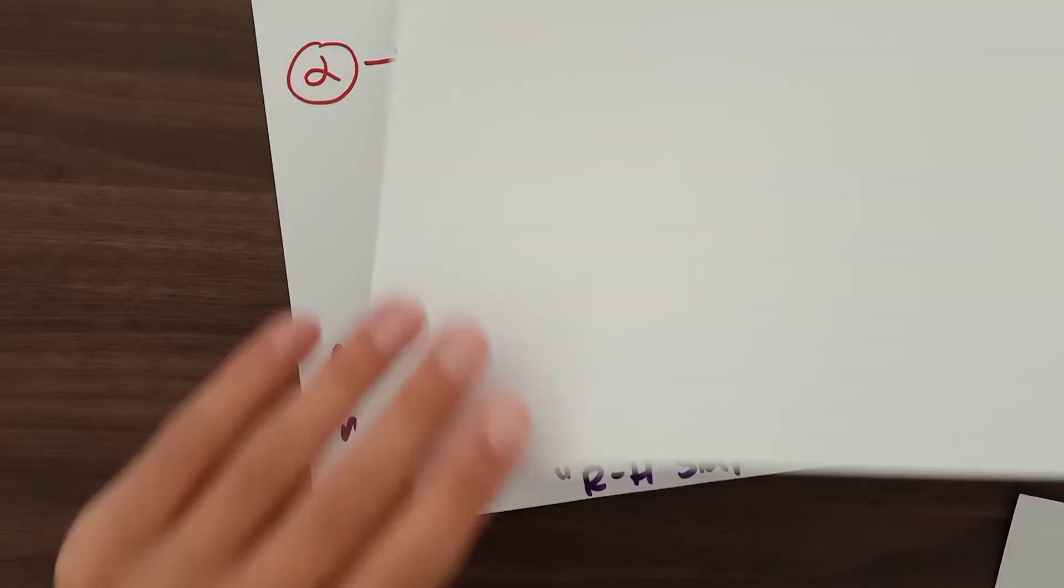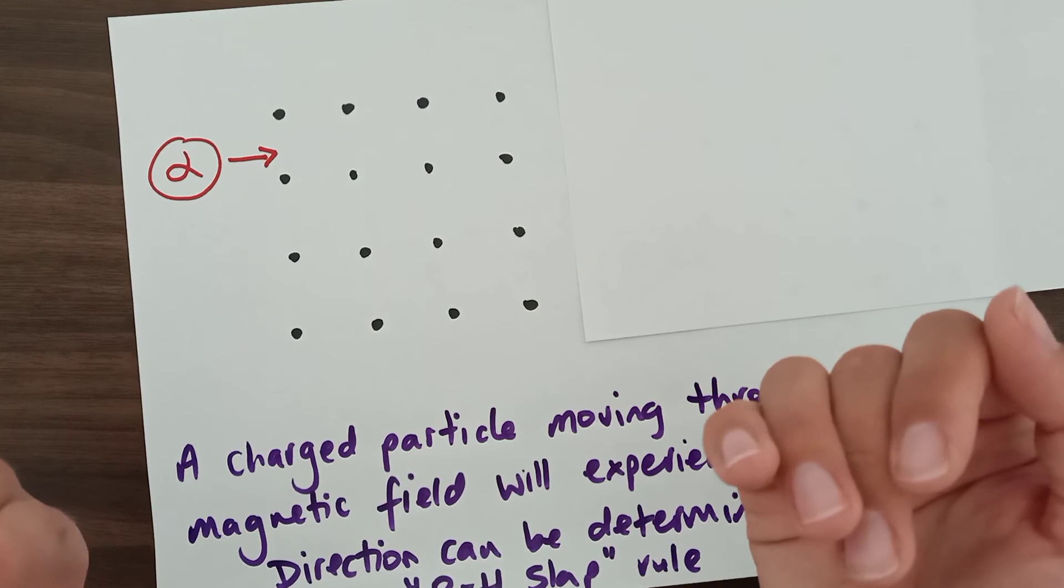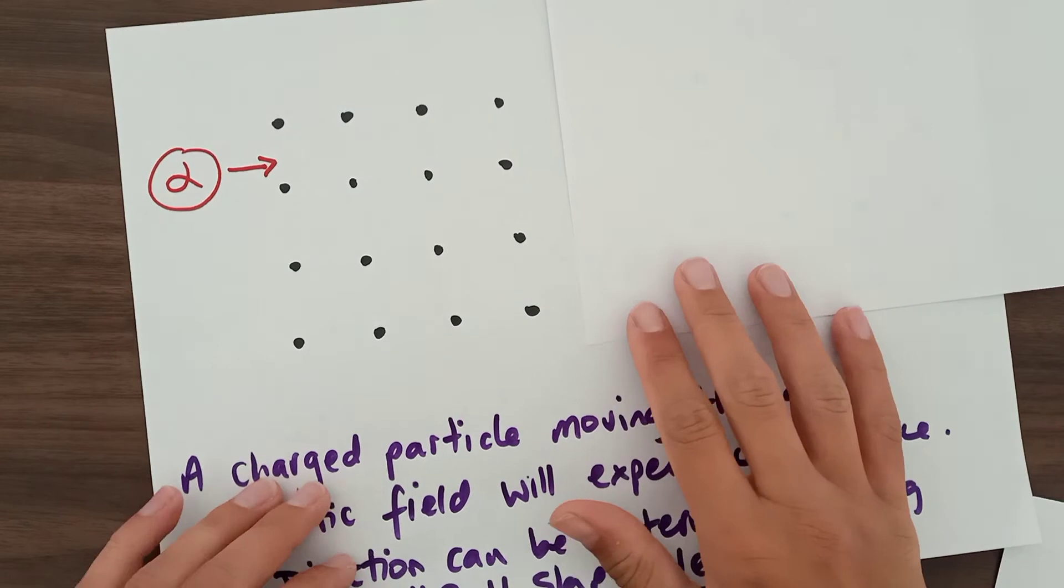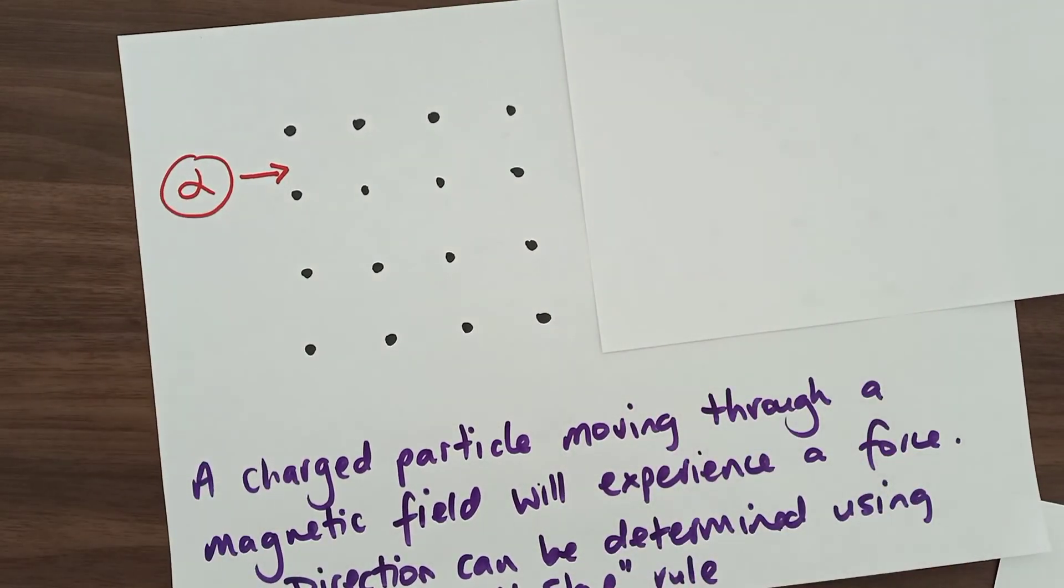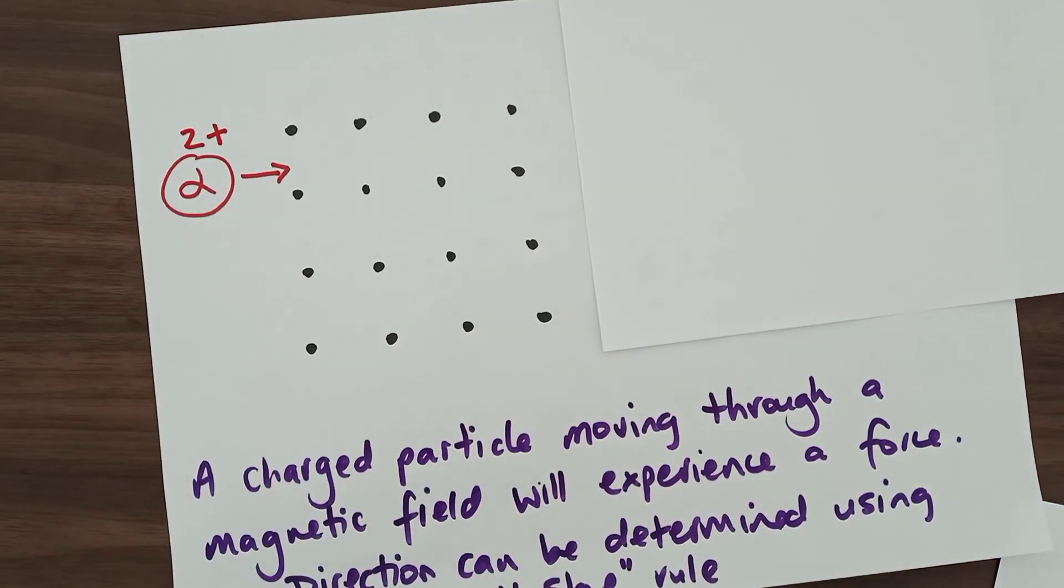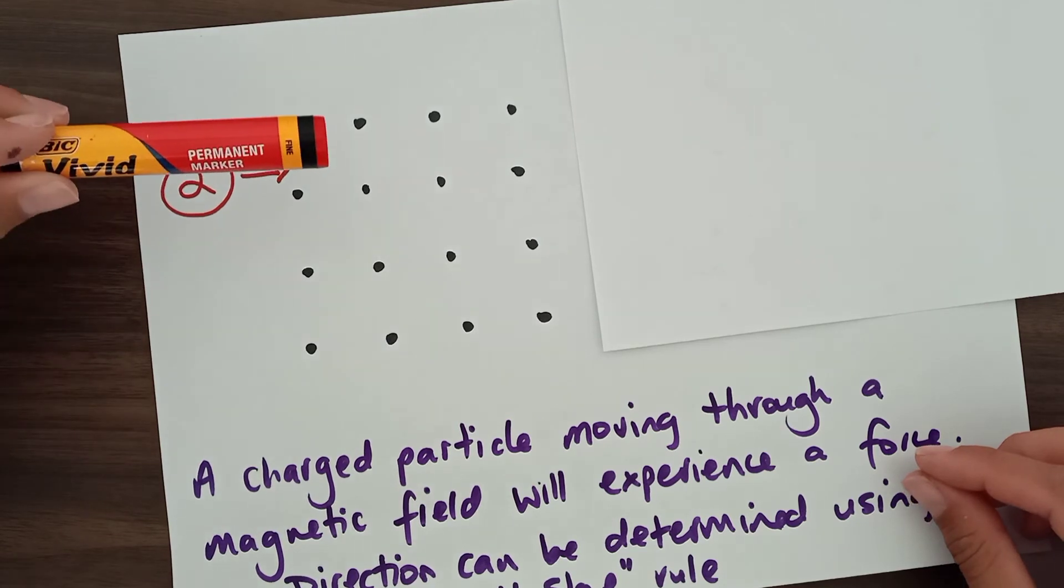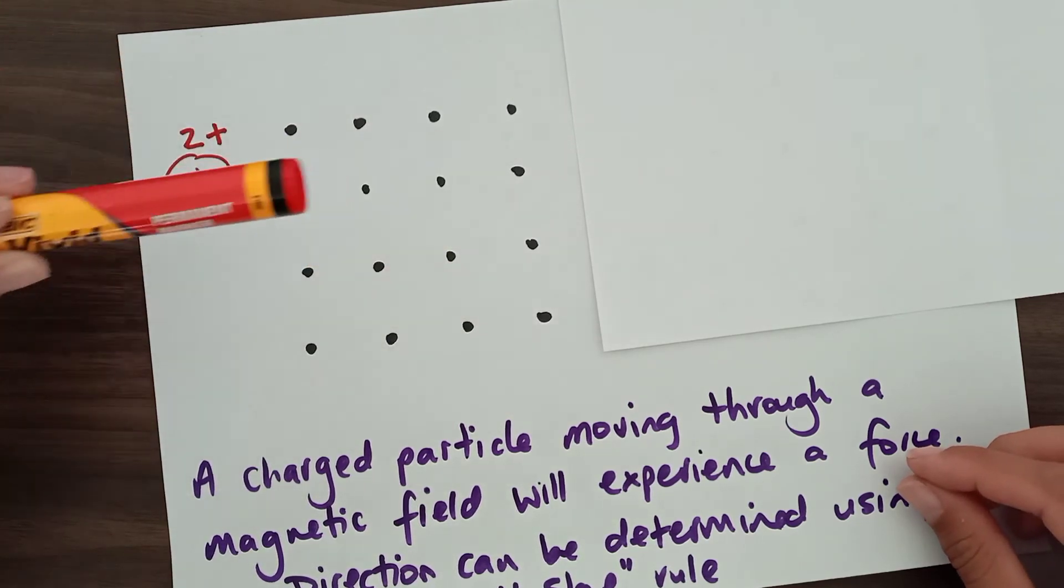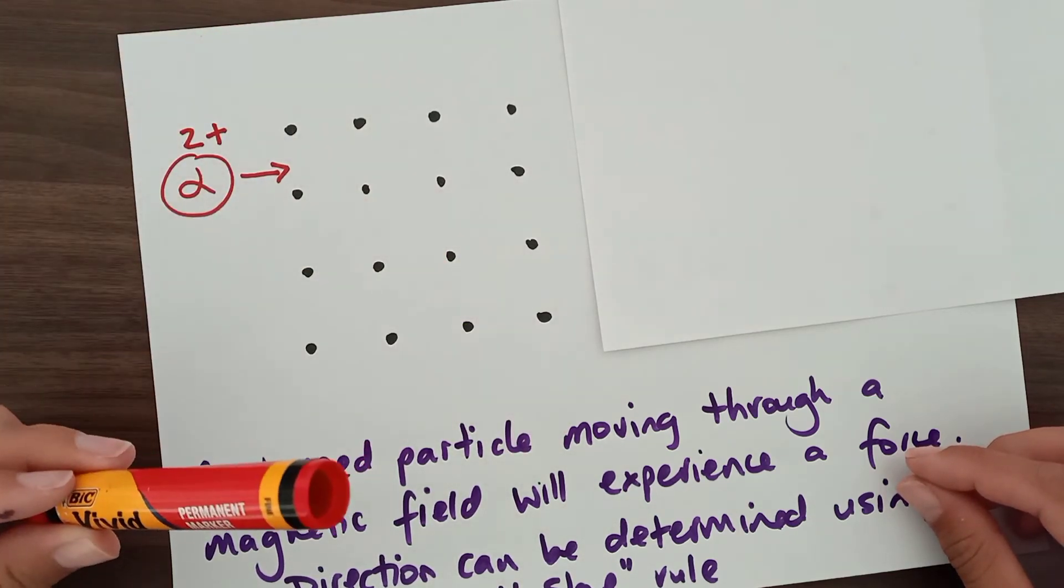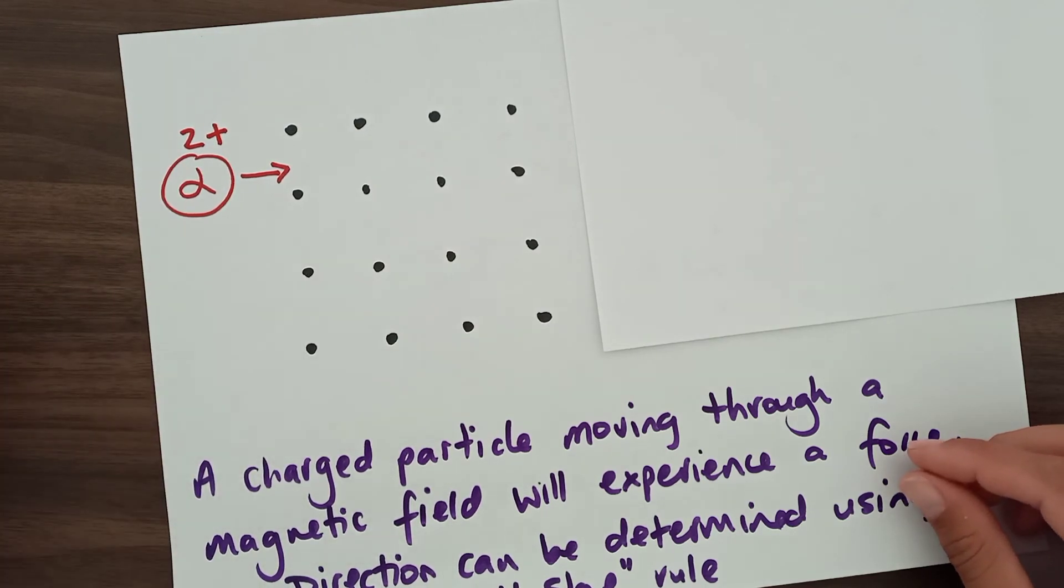So here I've got a magnetic field pointing out to us. So north is under the paper. South is coming out of the paper. And here I have an alpha particle, which is a positively charged particle. It has a 2 plus charge. And if we were to fire this particle through a magnetic field, it would start being diverted. Or its motion would change. Its direction would change one way or another. Because this magnetic field would be pushing it.